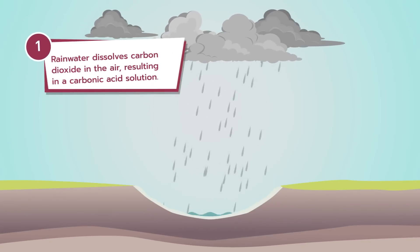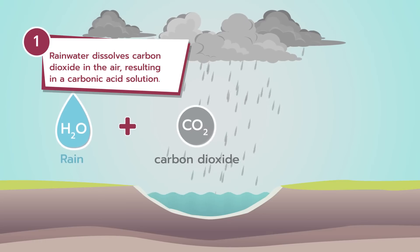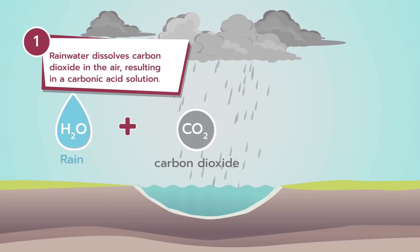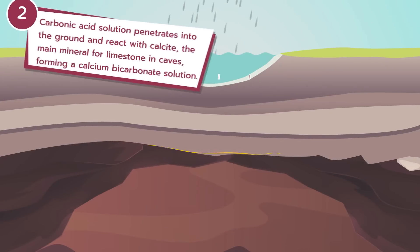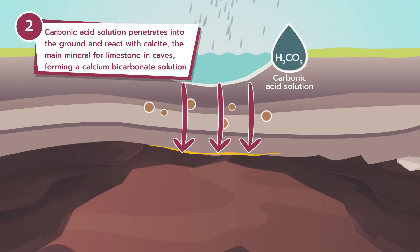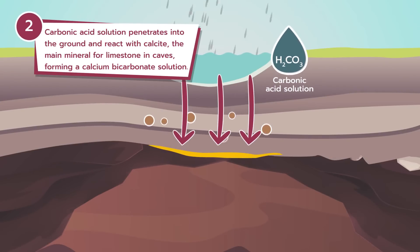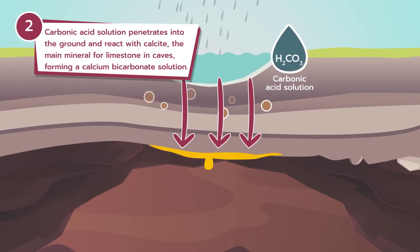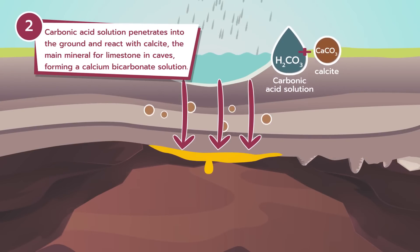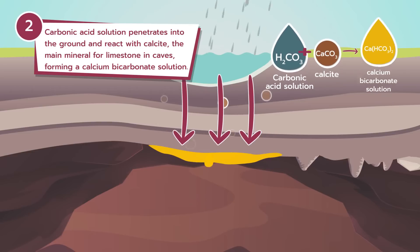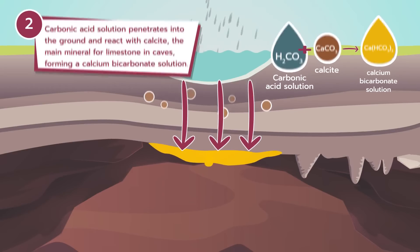Rainwater dissolves carbon dioxide in the air, resulting in a carbonic acid solution. The carbonic acid solution penetrates into the ground and reacts with calcite, the main mineral for limestone in caves, forming a calcium bicarbonate solution.